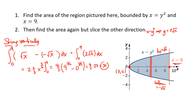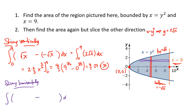Now what about slicing horizontally? When we slice horizontally, we think about a skinny horizontal rectangle with a little height delta y. We consider the right end of that rectangle minus the left end to get its width. So when slicing horizontally, the integral is the right function minus the left function, integrated with respect to y.